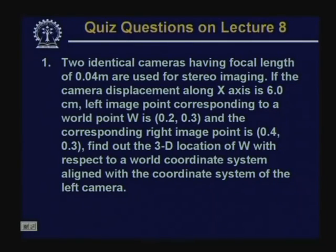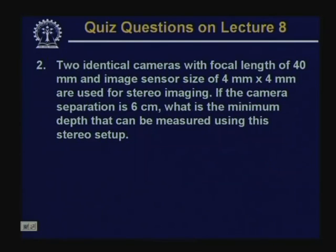For today's lecture, there are two assignment problems. Problem 1: Two identical cameras with focal length 0.04 m and camera displacement 6 cm along x-axis; left image point is (0.2, 0.3) and right image point is (0.4, 0.3) — find the 3D location of W aligned with the left camera coordinate system. Problem 2: Two identical cameras with focal length 40 mm, image sensor 4 mm × 4 mm, and camera separation 6 cm — find the minimum depth measurable using this stereo setup.